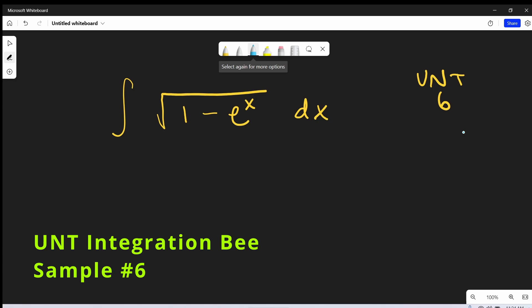We have the square root of 1 minus e to the x dx. I thought this was an interesting problem just because this is the case where I think we want to do a u substitution. It's not really apparent what we want to do for a u substitution, so you may try a few things before finding something that works.